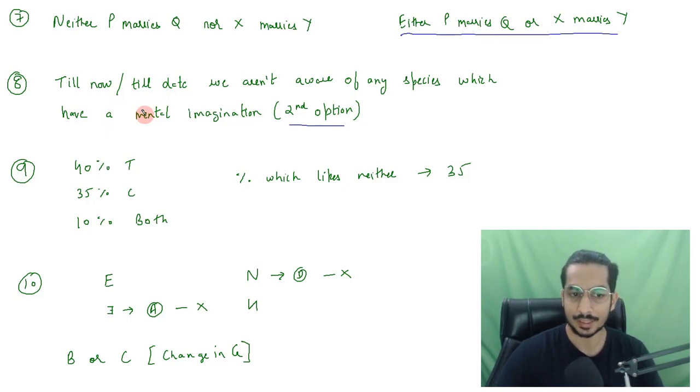There were two statements where I think some confusion was lying. This was the second option and there was one other option which is the fourth option which said, there isn't any species which has mental imagination similar to that of humans. But, till now, because in the statement they had mentioned that till now we haven't been able to find out any other species. This was very important that till now or till the date, one of these sentences was given. Till now or till date, we aren't aware of any species which have a mental imagination similar to that of humans. According to that, I think the second option is the correct answer.